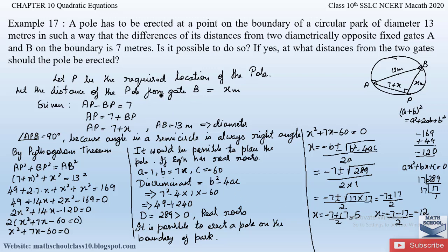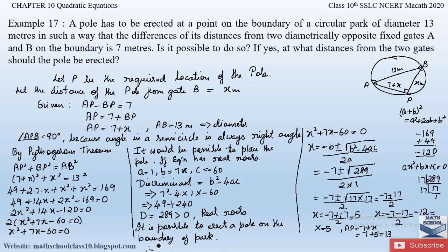Since x represents the distance from gate B to the pole, it cannot be negative. So we take x = 5 and discard x = −12. Therefore BP = 5 meters, and AP = 7 + x = 7 + 5 = 12 meters. So the pole has to be erected 5 meters from gate B and 12 meters from gate A.